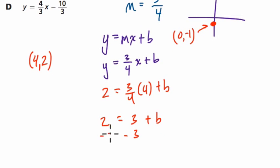Well, subtract 3 from both sides. And you'll see that b equals negative 1. So that's the third way of dealing with it.